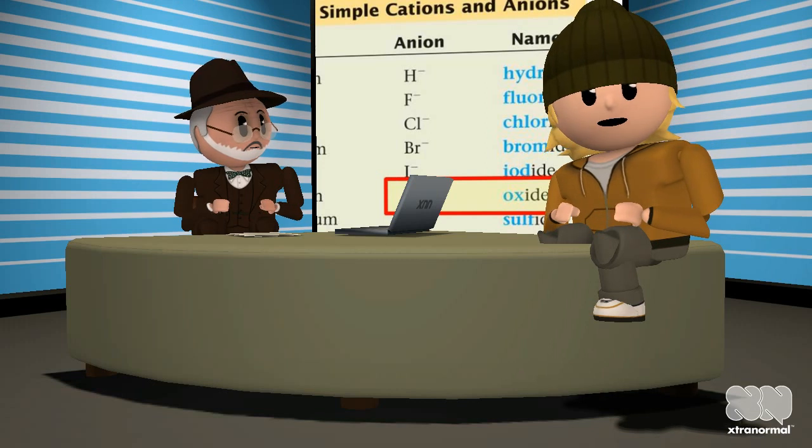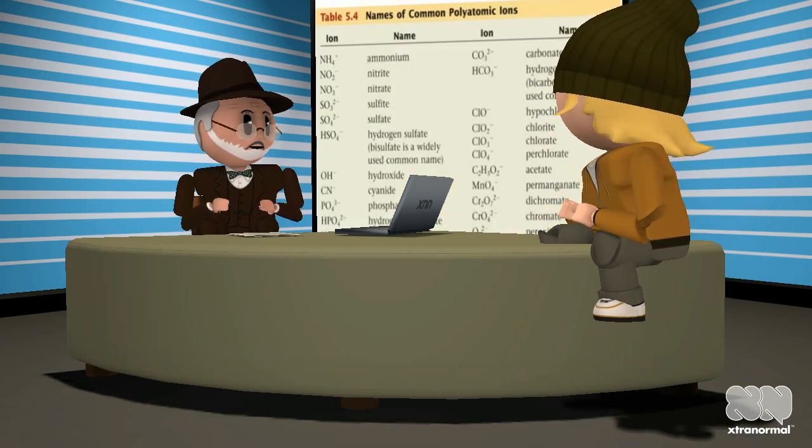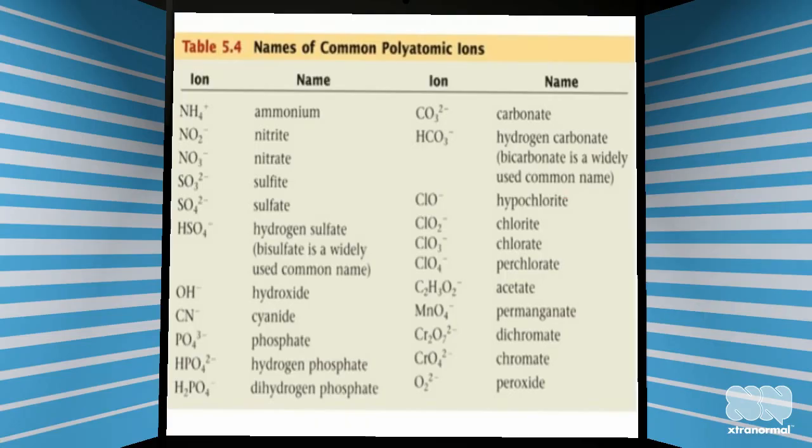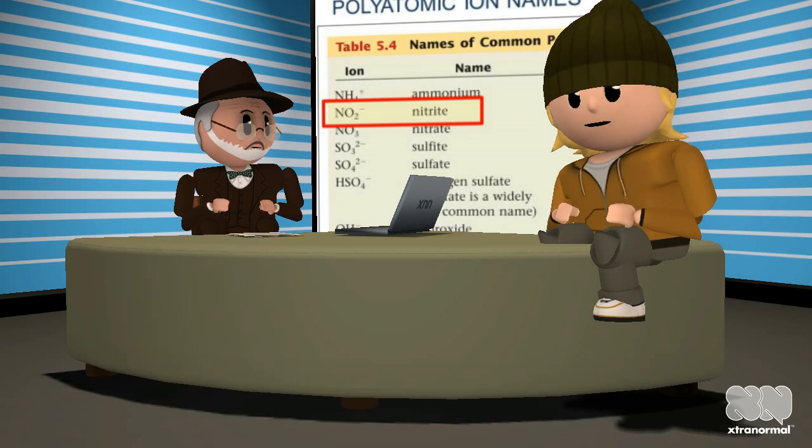This is easy. What about these complicated ions? I think you call them polyatomic ions. Yes, take a look behind me. Here is a list of many of the polyatomic ions and their names. Look at NO2 with one negative charge that is called the nitrite ion and if you combine it with a metal, such as potassium, you end up with potassium nitrite.